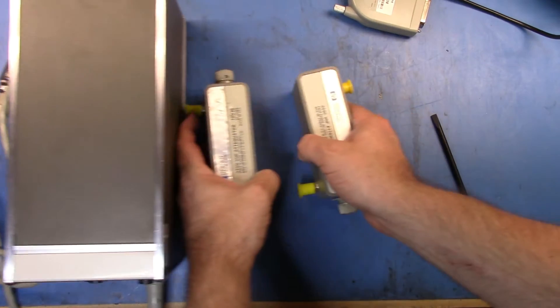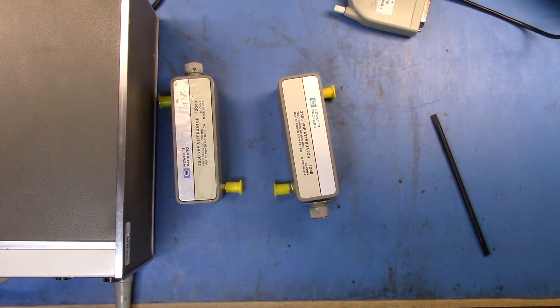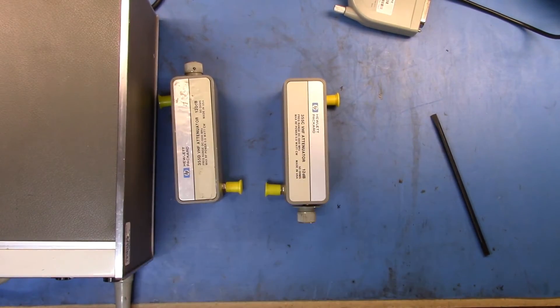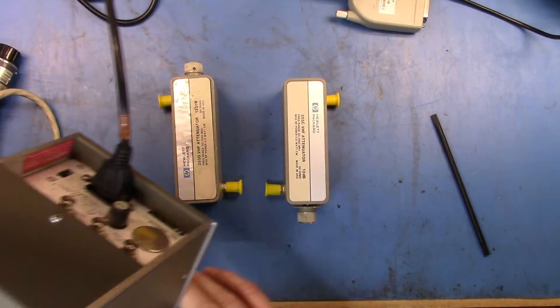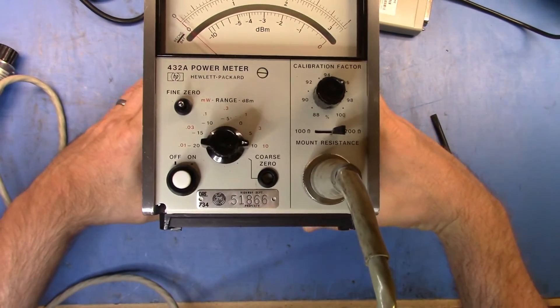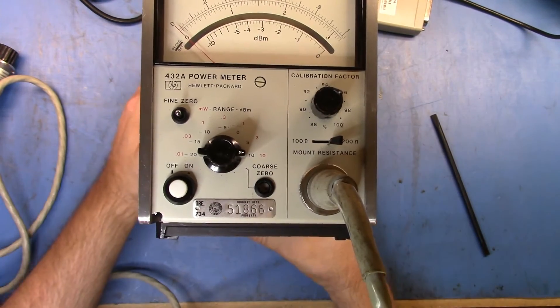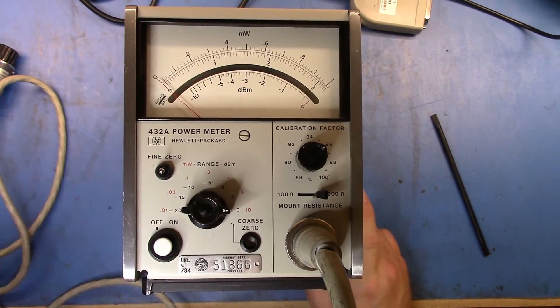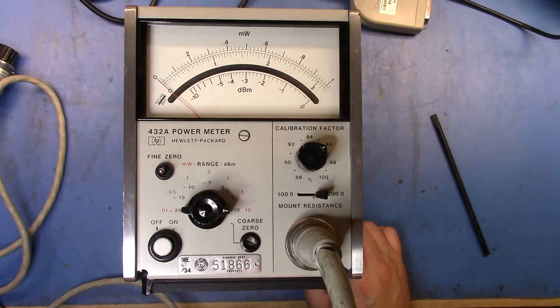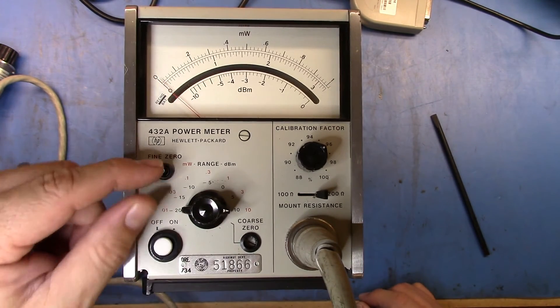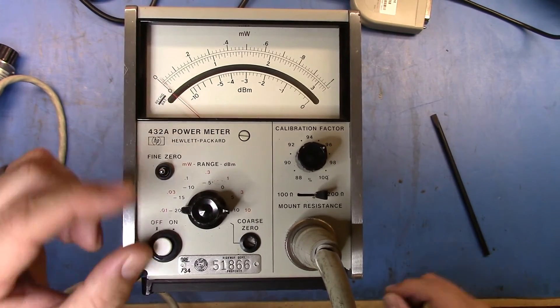Let me get a couple of other classic HP gear—this is the 355D and a 355C. These are step attenuators. They're fantastic pieces of kit, and you can pick them up quite inexpensively on eBay these days. Let's just get that in there so it's not sitting on its back.